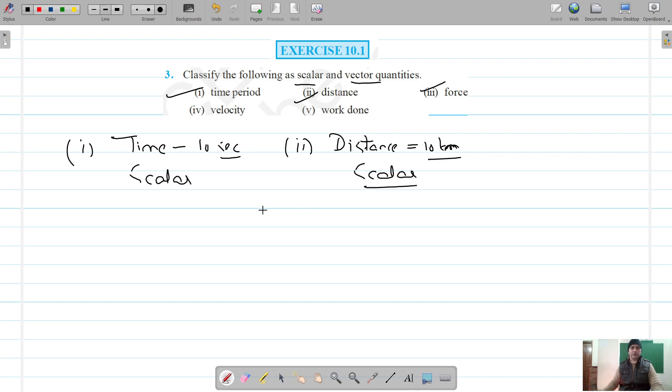Third one is force. We know that we apply force, let's say 10 Newton in a particular direction, let's say towards the right side. So this one has both magnitude and direction, so force is a vector quantity.